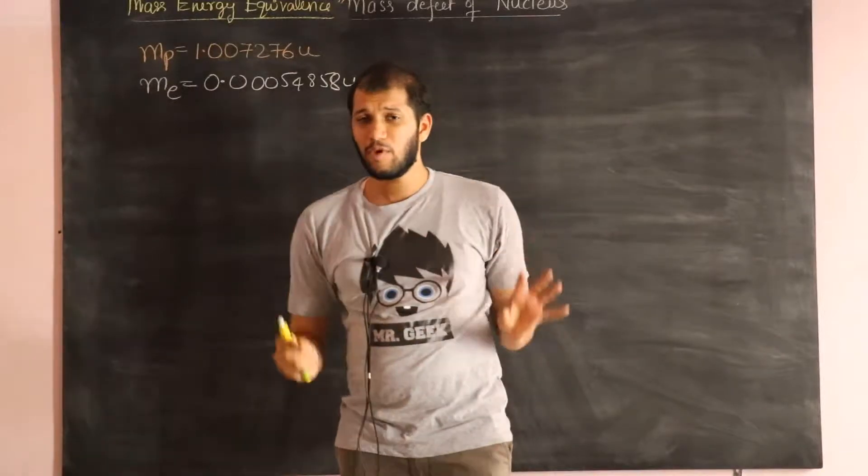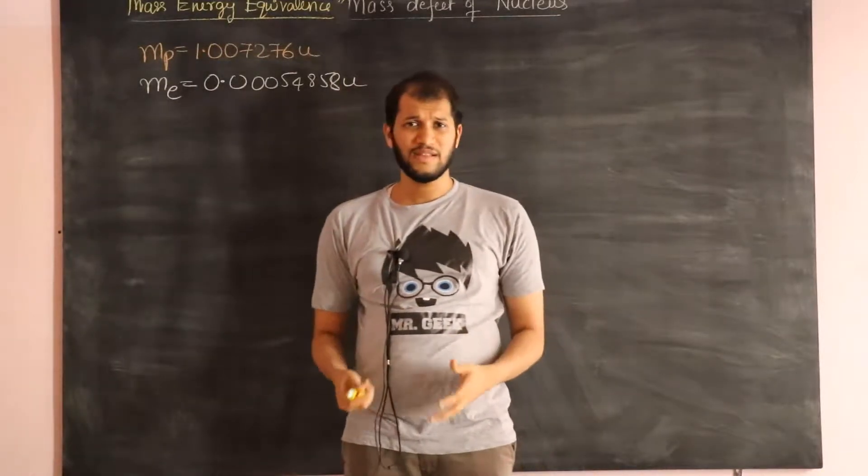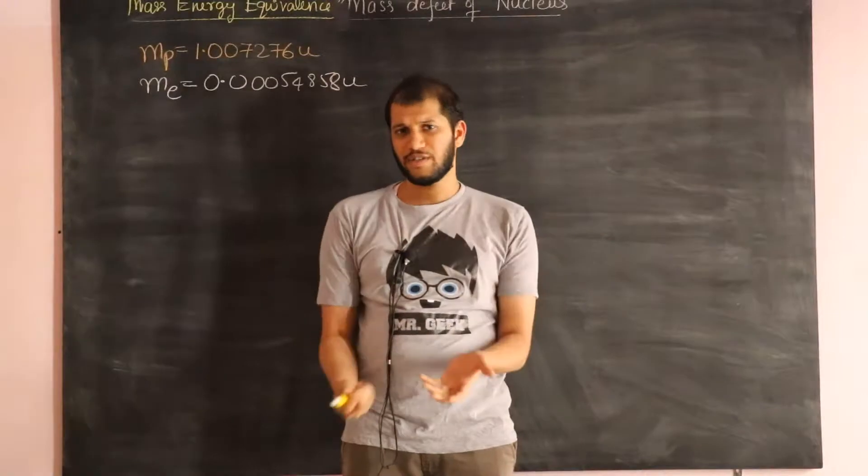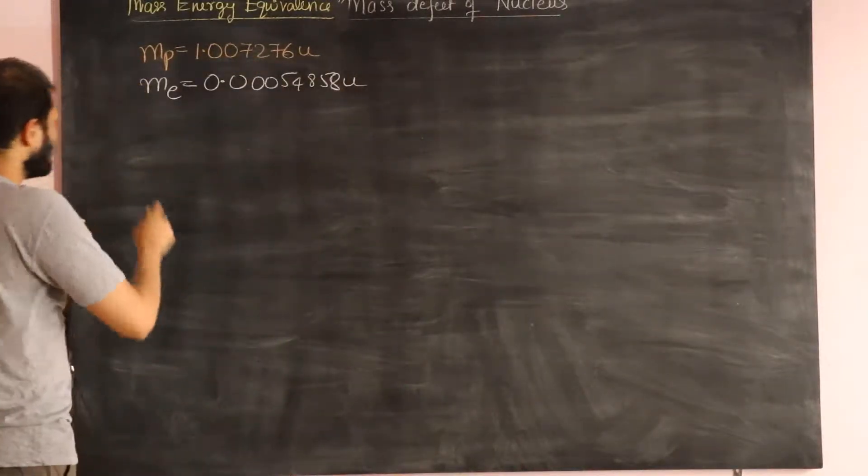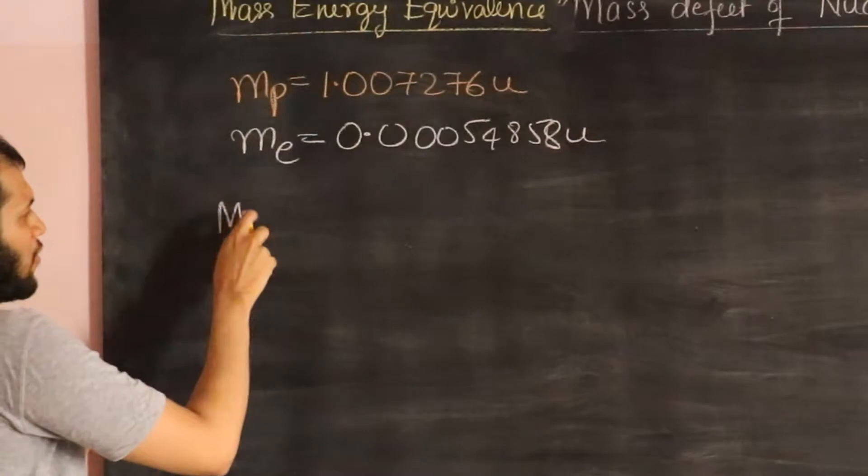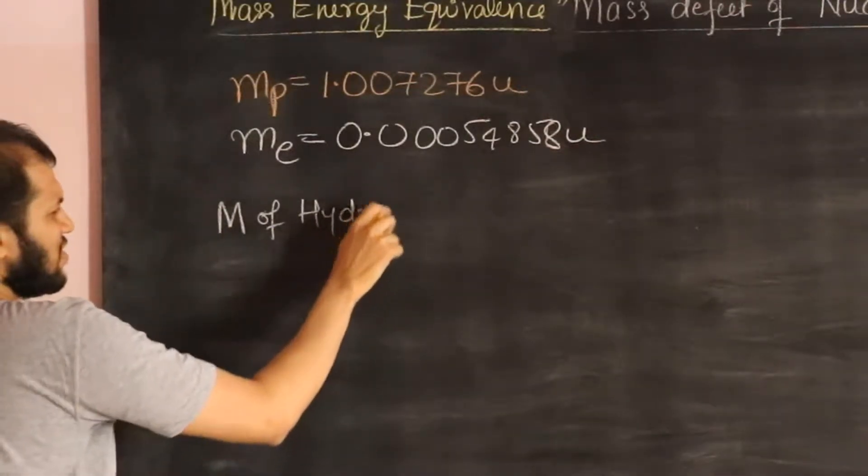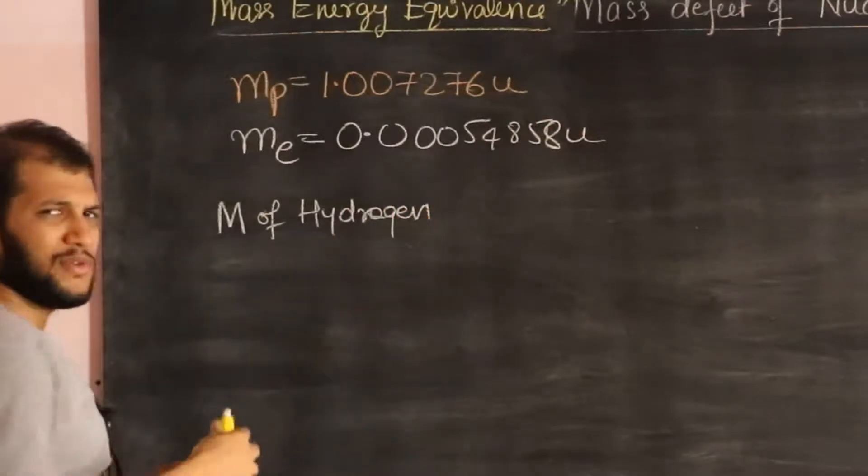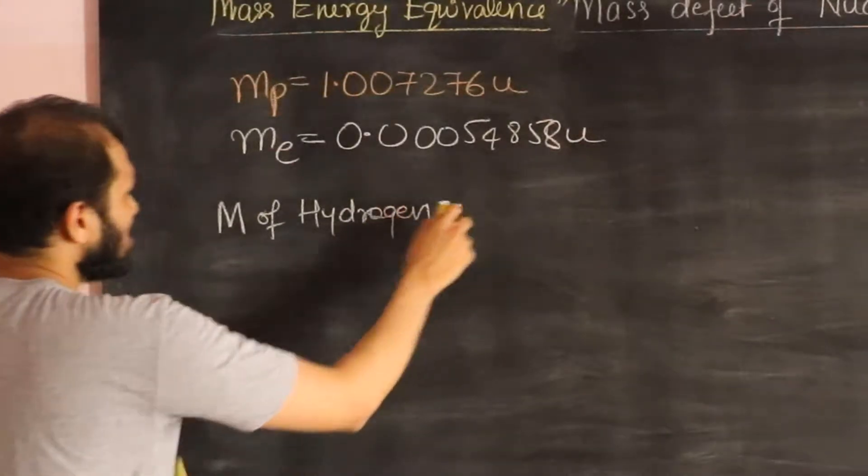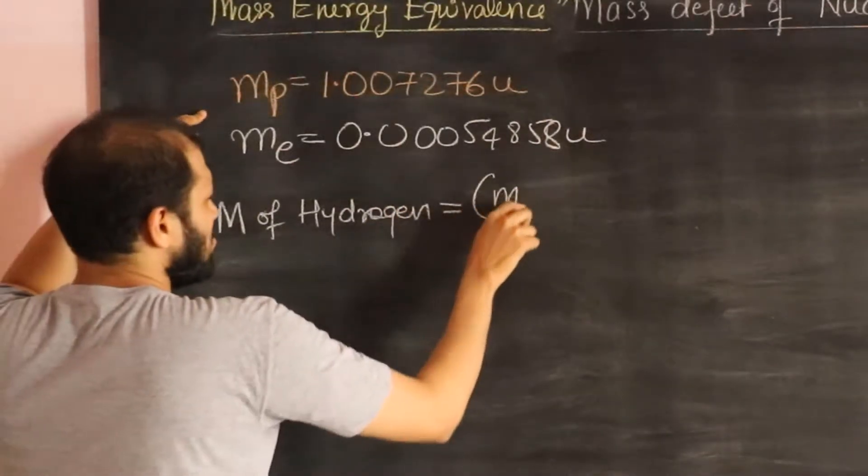So if you don't think about Einstein's mass-energy equivalence and I asked you what is the mass of a hydrogen atom, you would say, well, these numbers are given to us, so you would say mass of the hydrogen atom - I won't substitute the values, the values are not important, the concept is important - you would just say it is Mp plus Me.